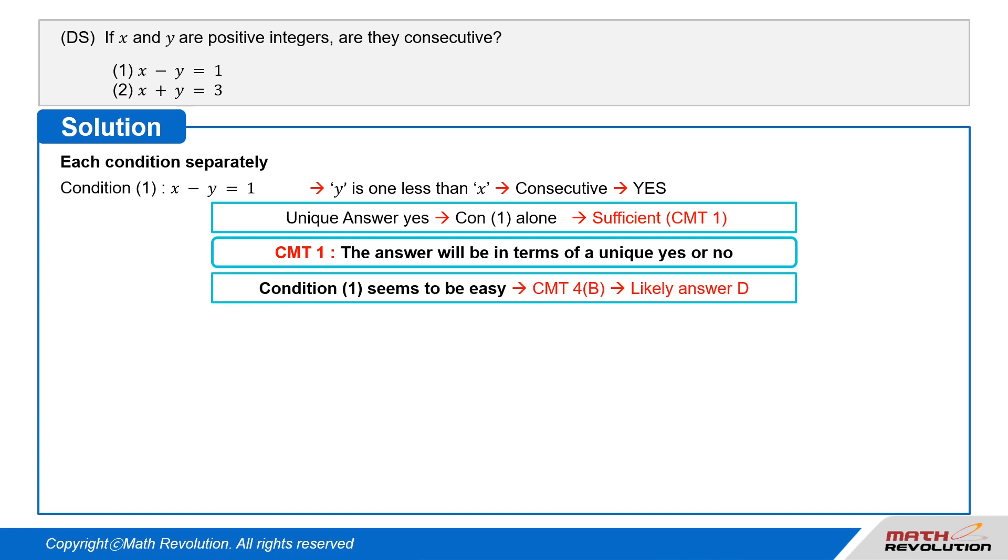Now, condition 1 seems pretty easy, so we should look for CMT4B, which tells us that there is a greater probability that D is the answer. Therefore, let's look at condition 2.